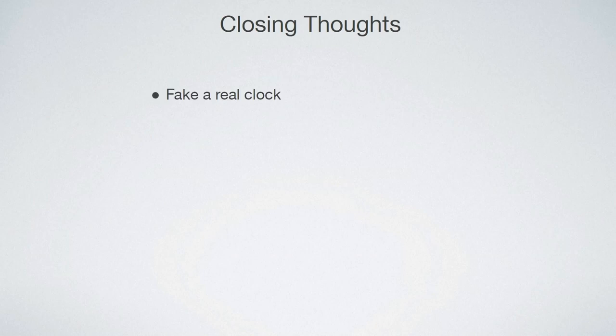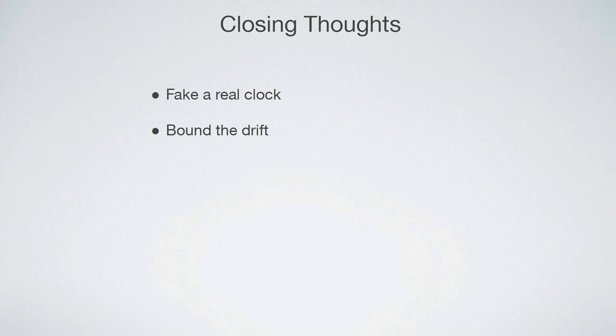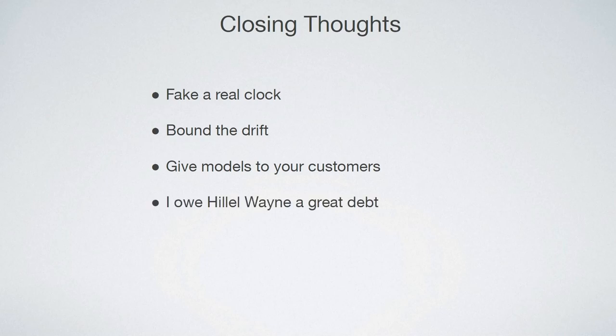So in closing: if you have a system that depends on clocks being altogether and is really deeply baked into the system design, you should consider faking a real clock in your model. If you care about those clocks being different, put a bound on the clock drift, and definitely consider giving executable models to your customers. And finally, Hillel Wayne — I owe you everything. Thank you.